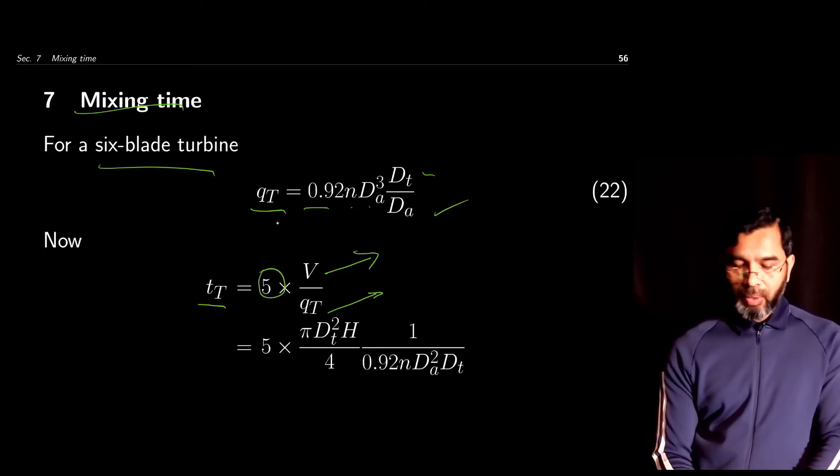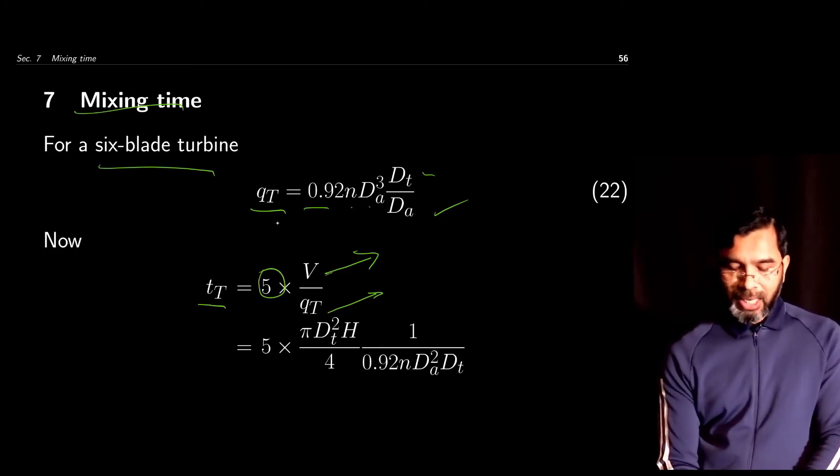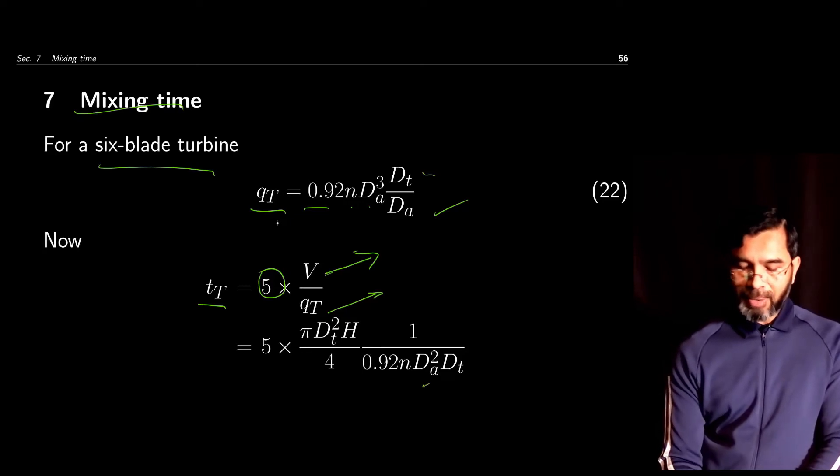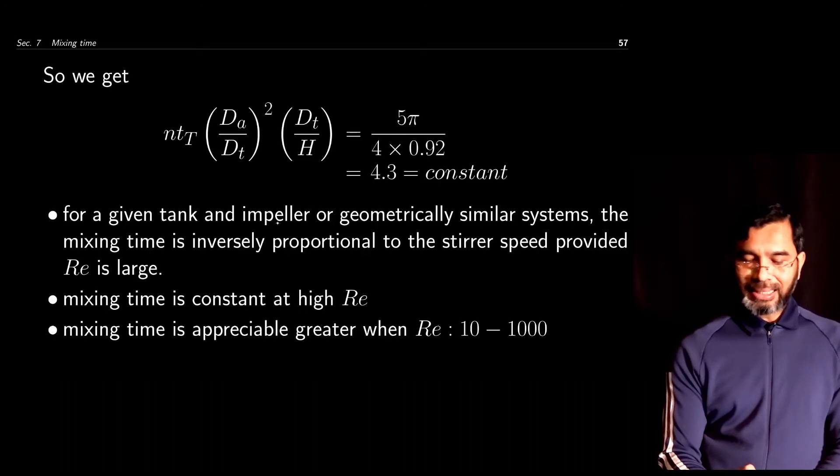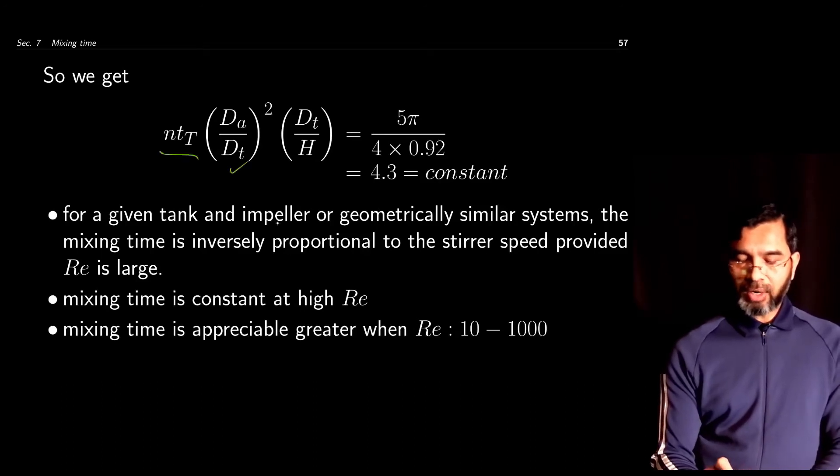We know that the volume of the liquid is given by π/4 dt²h. Multiplying this, we get after simple reformulation: ntt times da/dt² times dt/h becomes a constant.